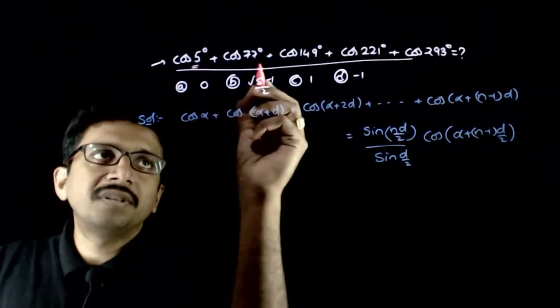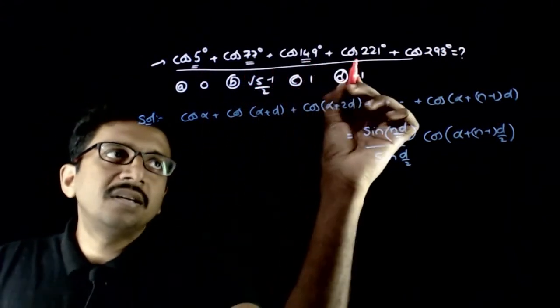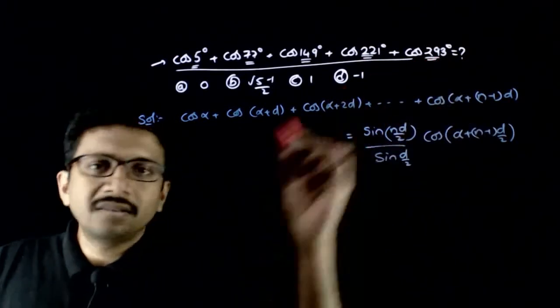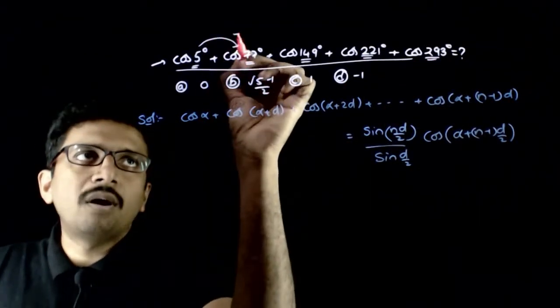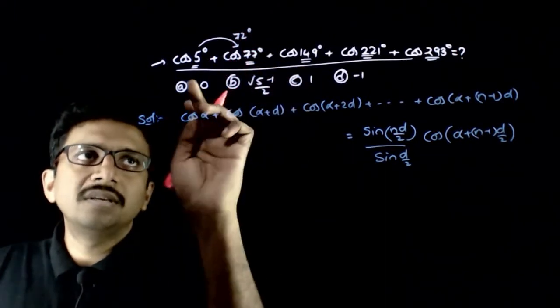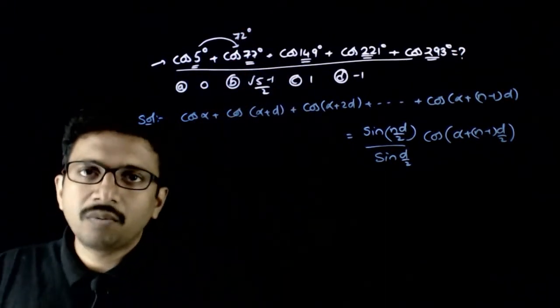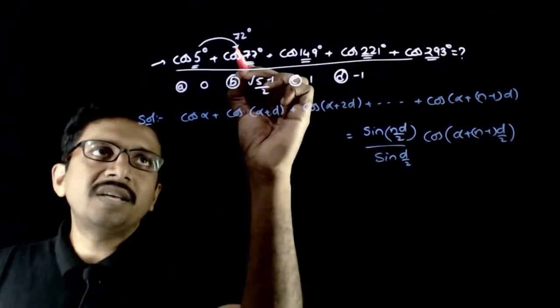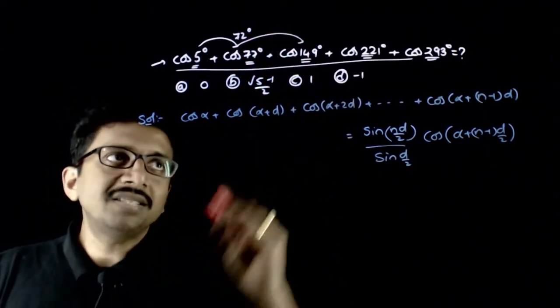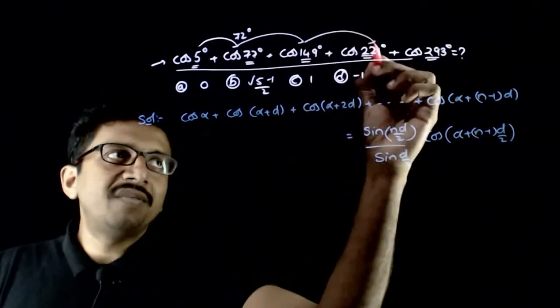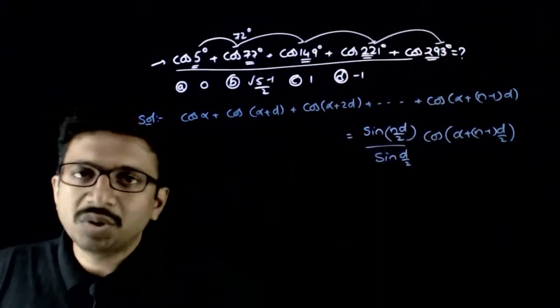If you carefully observe the angles that are given here, these angles are in AP with a common difference of 72 degrees. 5 plus 72 is 77, 77 plus 72 is 149 degrees, plus 72 is 221 degrees, plus 72 is 293 degrees.